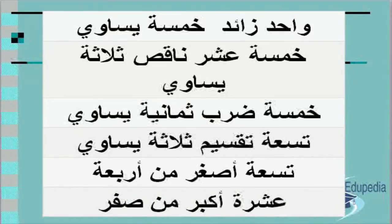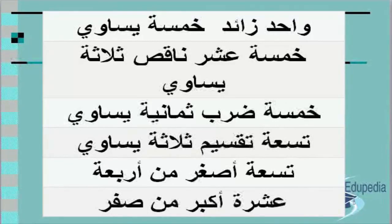Number two: خمسة عشر ناقص ثلاثة يساوي. What's the answer for this equation? الجواب إثنى عشر — fifteen minus three equals twelve. Number three: خمسة ضرب ثمانية يساوي. الجواب أربعون — five times eight equals forty.